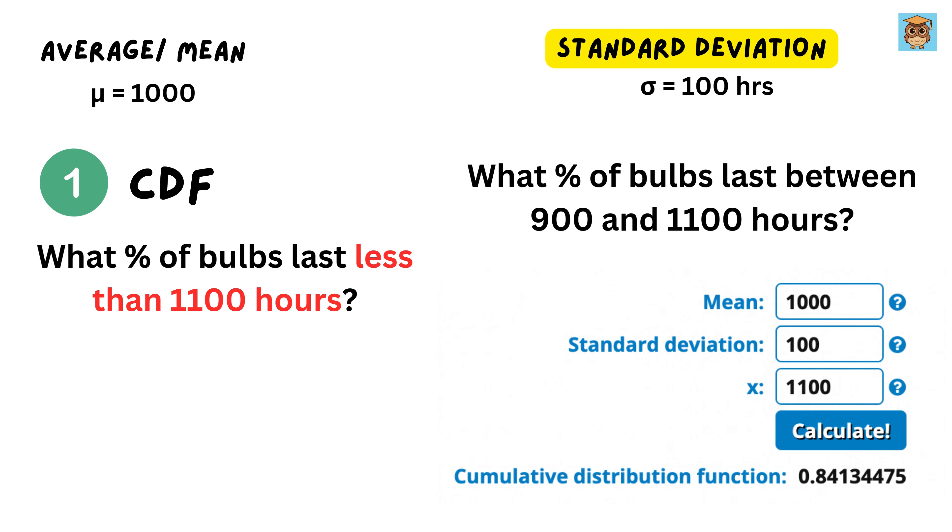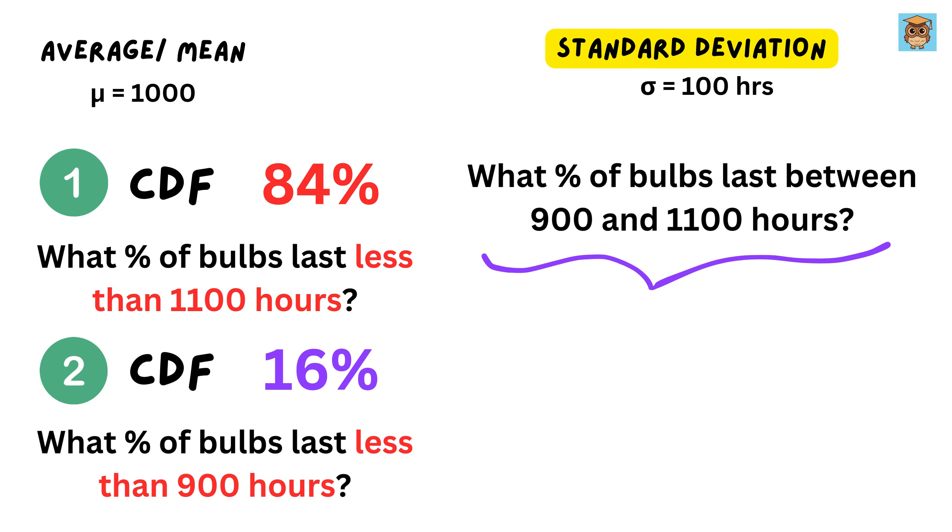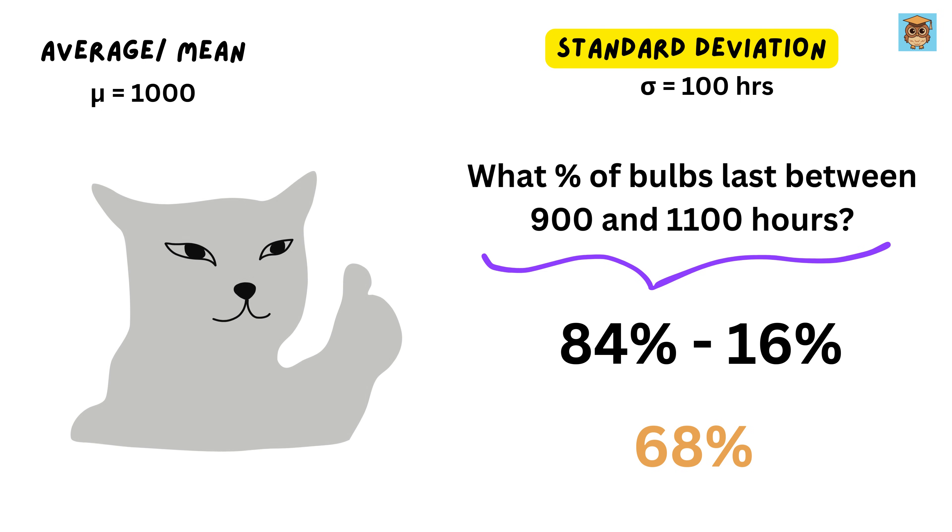For 1,100 hours, we use a statistics table or calculator to find the CDF of a normal distribution. We get this as approximately 84%. Using the same method, the CDF tells us that about 16% of bulbs last less than 900 hours. Therefore, to get the percentage of bulbs that last between these two values, we subtract 84% minus 16% equals 68%. So, 68% of the bulbs last between 900 and 1,100 hours. This is how we solve problems in statistics. So good.